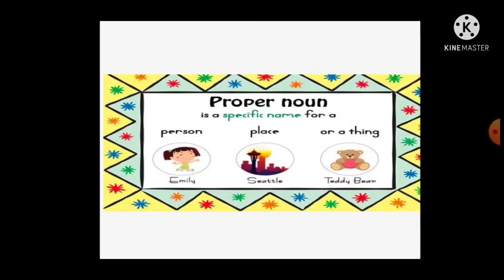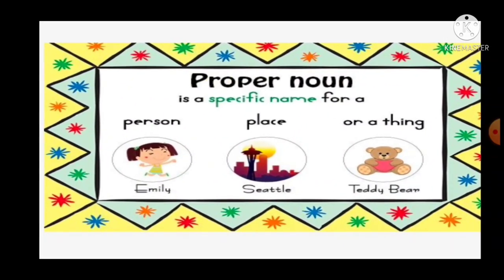In this proper noun, it is the name of a person, a special building, or a river, etc. It is always written with capital letters. For example, a person: Emily; a place: settle; a thing: teddy bear. So proper noun is always written with capital letters, and it is mentioning a special one.